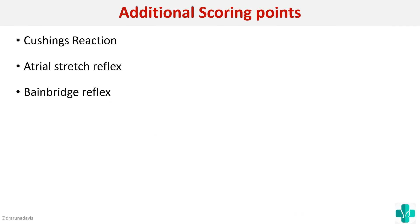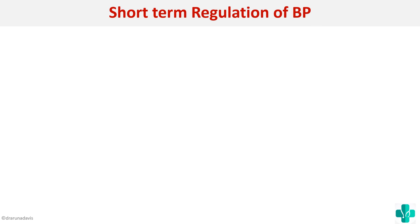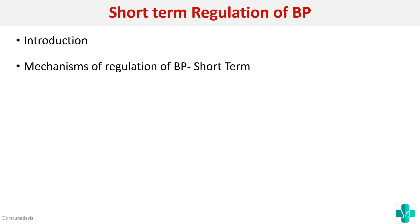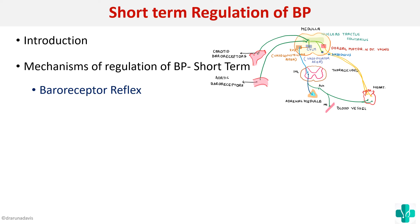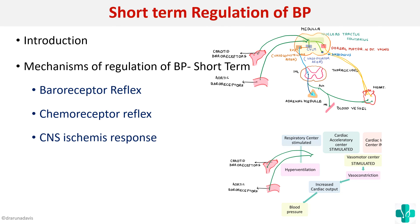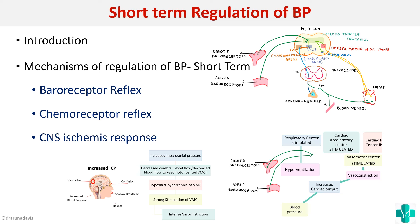For additional scoring points, you can also mention Cushing's reaction, atrial stretch reflex, and Bainbridge reflex, though these are less important than the main three. To summarize, when a short note on short-term regulation of BP is asked: start with an introduction, list the three mechanisms of regulation, then cover short-term regulation including the baroreceptor reflex with a flowchart or diagram, then the chemoreceptor reflex, and finally the CNS ischemic response.